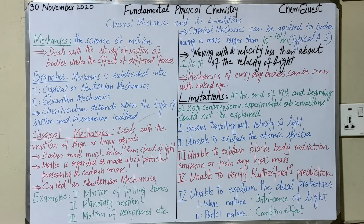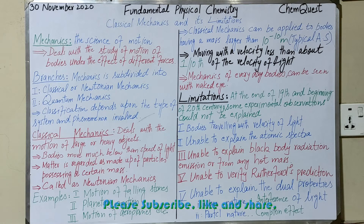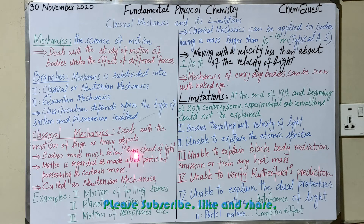Classical mechanics is based on Newton's laws of motion. Newton's laws explain the motion of much bigger bodies and related phenomena. Classical mechanics deals with bodies that are large in size, have appreciable mass, and travel at speeds much below the velocity of light. That is why it is also called Newtonian mechanics.